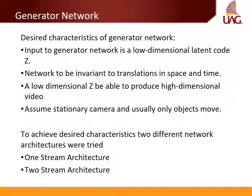The desired characteristics of the generator network G are: the input is a low-dimensional latent code Z; the network should be invariant to translations in space and time; a low-dimensional Z should be able to produce high-dimensional video; and it assumes a stationary camera where usually only objects move. To achieve these characteristics, two different network architectures were tried: a one-stream architecture and a two-stream architecture.